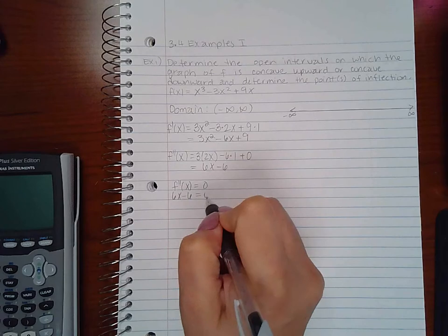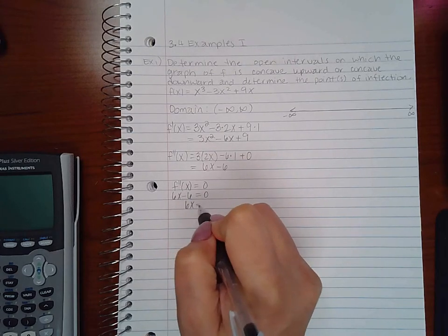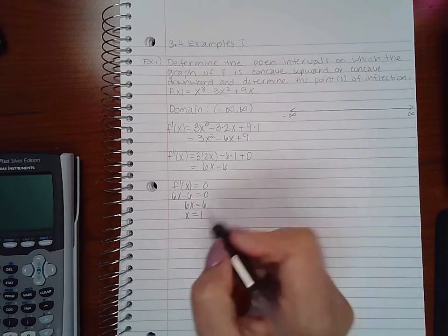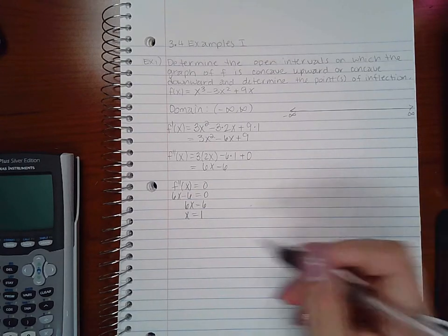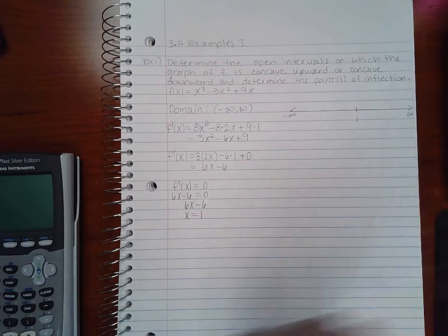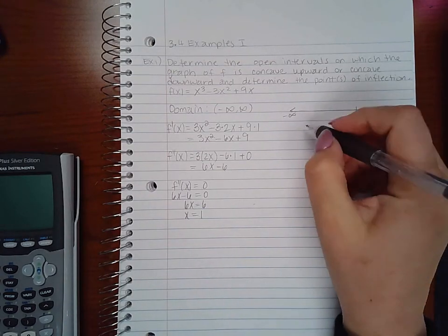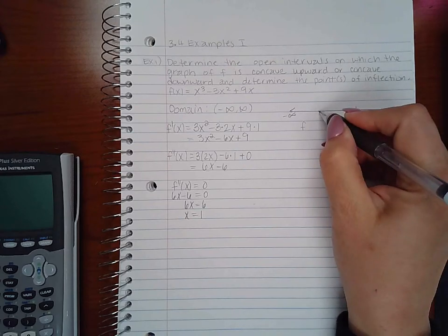So when does 6x minus 6 equal 0? Well I can add 6 to both sides and then I can divide both sides by 6, so I get x equals 1. This is the only critical number I found in the whole real number line.